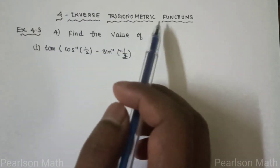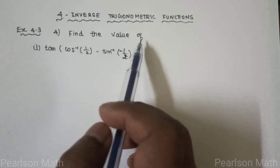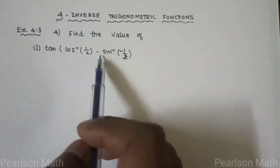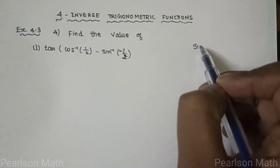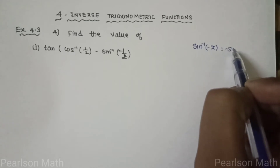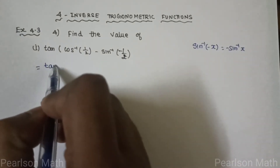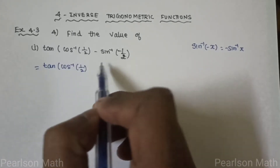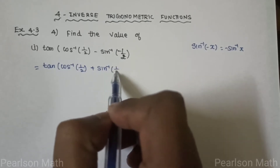Students, Chapter 4: Inverse Trigonometry Functions, Exercise 4.3, fourth sum. Find the value — first subdivision: cos inverse of 1/2 minus sin inverse of minus 1/2. Since sin inverse of minus x equals minus sin inverse of x, this becomes cos inverse of 1/2 plus sin inverse of 1/2.